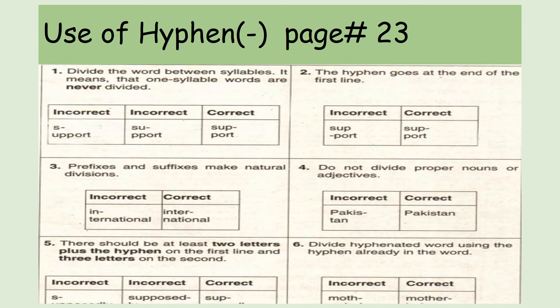Rule 4: Do not divide proper nouns or adjectives. Words that are proper nouns or proper adjectives should not be divided. For example, if someone's name is Sarah, you should not write 'Sa-' on one line and 'rah' on the next — it looks bad. Similarly, Pakistan should be written completely; do not break it into pieces.